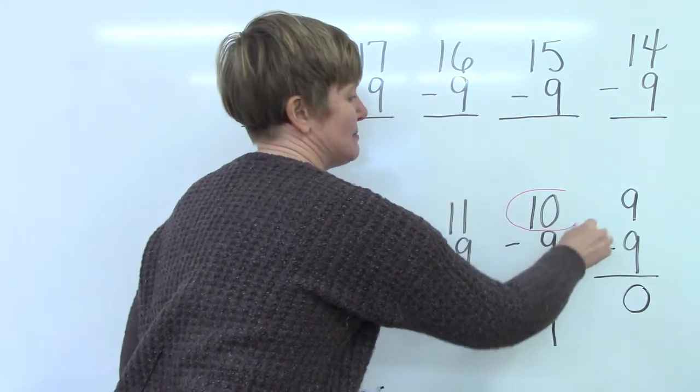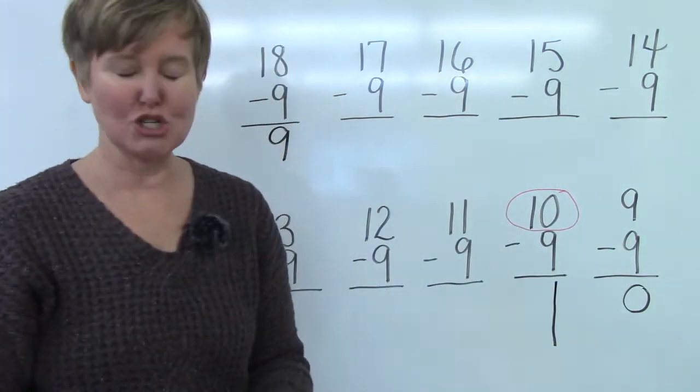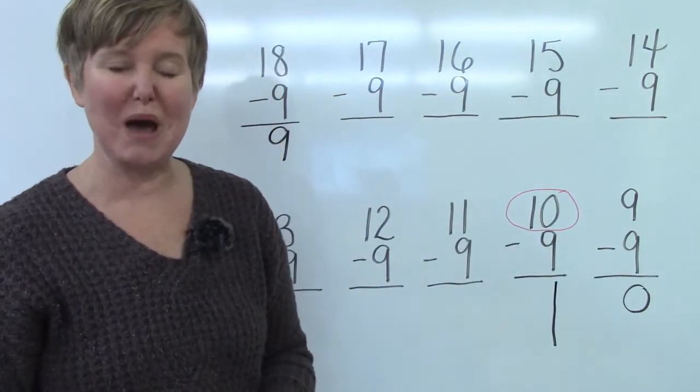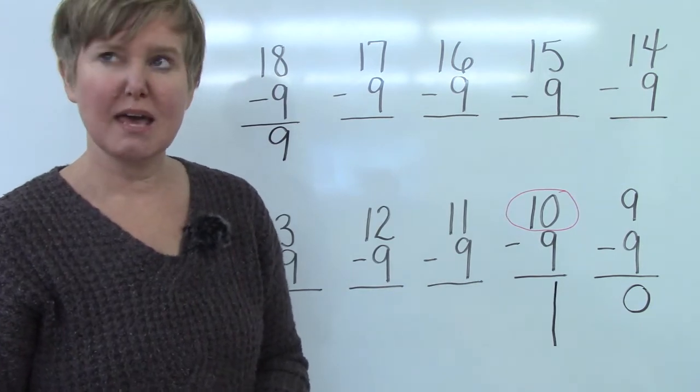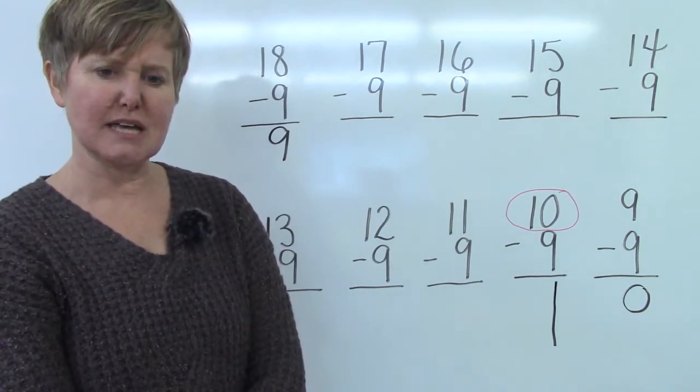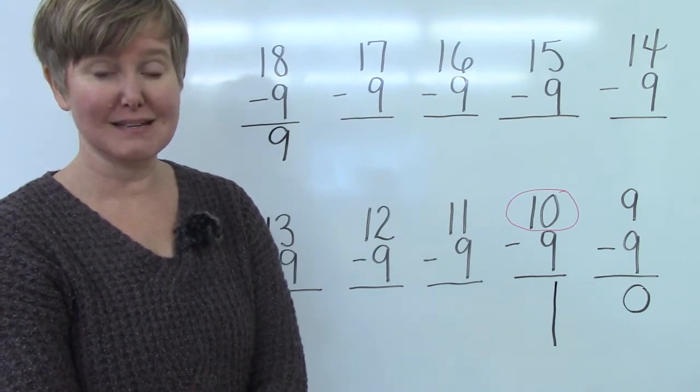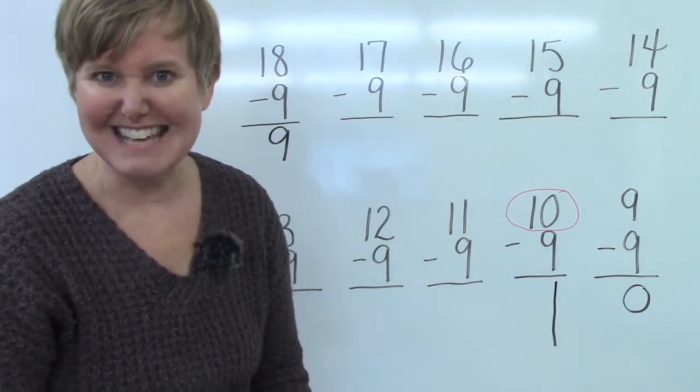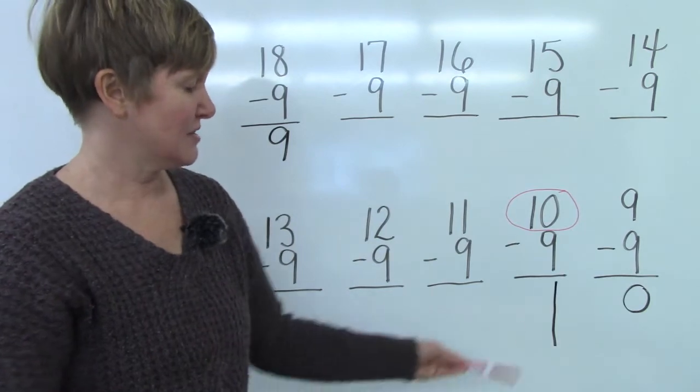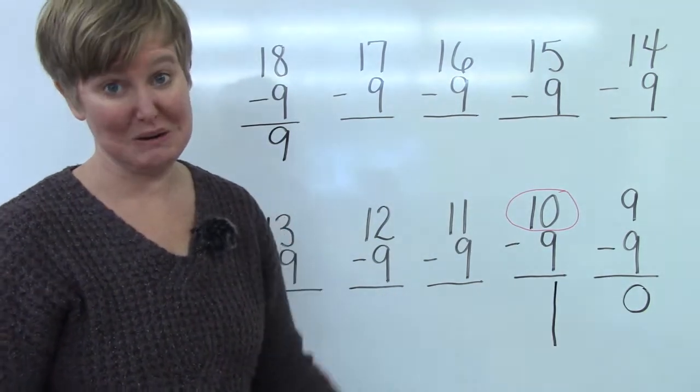And I would like for you to see our little trick. I want you to look at the number ten. And there are two digits. The digit one and the digit zero. If you were to add those two digits together what would your answer be? One plus zero is? Well it's one isn't it? And what was our answer? Our answer was one.